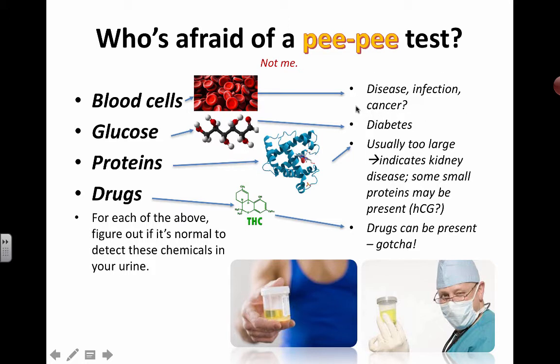If you understand the functioning of your kidney, you should know that blood cells are supposed to be too big to flow through. But if there is some tissue damage, it's probably not coming directly from the kidney — it could be somewhere else.